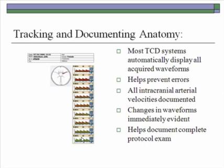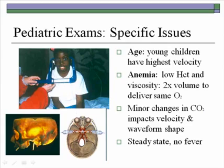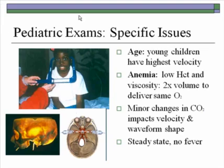Performing a study on a child with sickle cell anemia means looking at a very small head with small vessels not greatly separated from anterior to posterior. To predict the level of the bifurcation and vessel depths, it is helpful to do a bitemporal head diameter measurement right in front of the ear. Dividing the bitemporal diameter by 2 gives you the midline, and the intracranial bifurcation is usually about 10 millimeters from the midline — very helpful during the exam.